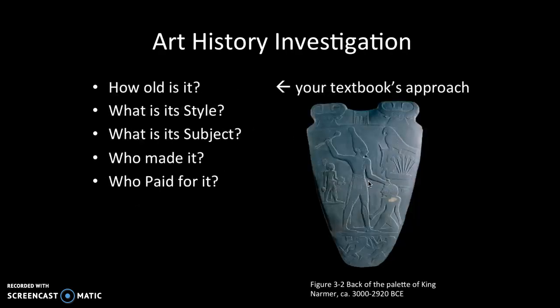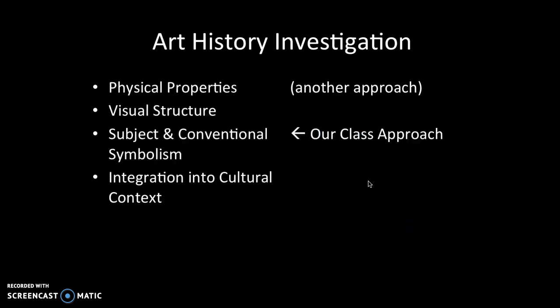That is what your textbook talks about, but I'd like to organize our class differently. These are all lovely questions to ask and answer, and we will answer them, but we're going to organize them differently. We're going to talk about four different categories: physical properties, visual structure, subject and symbolism, and integration into cultural context.